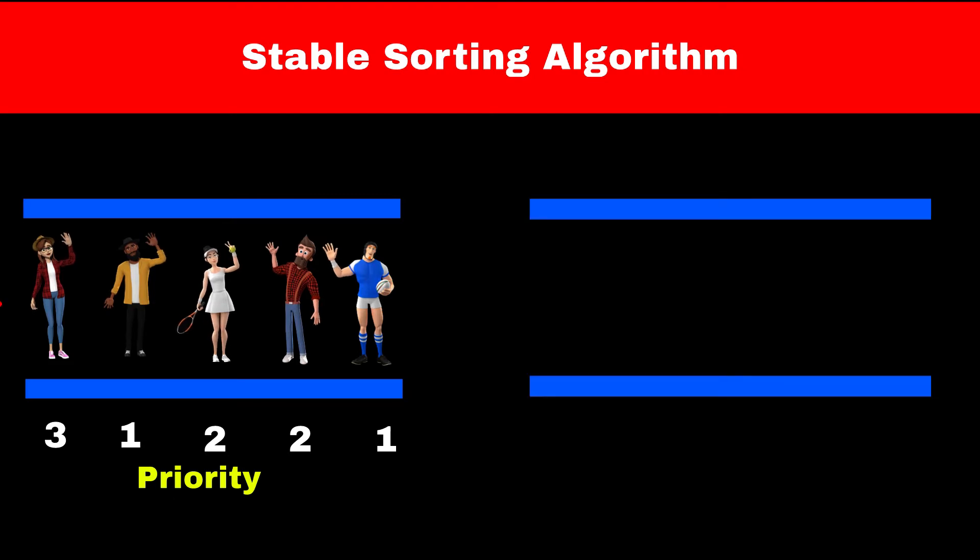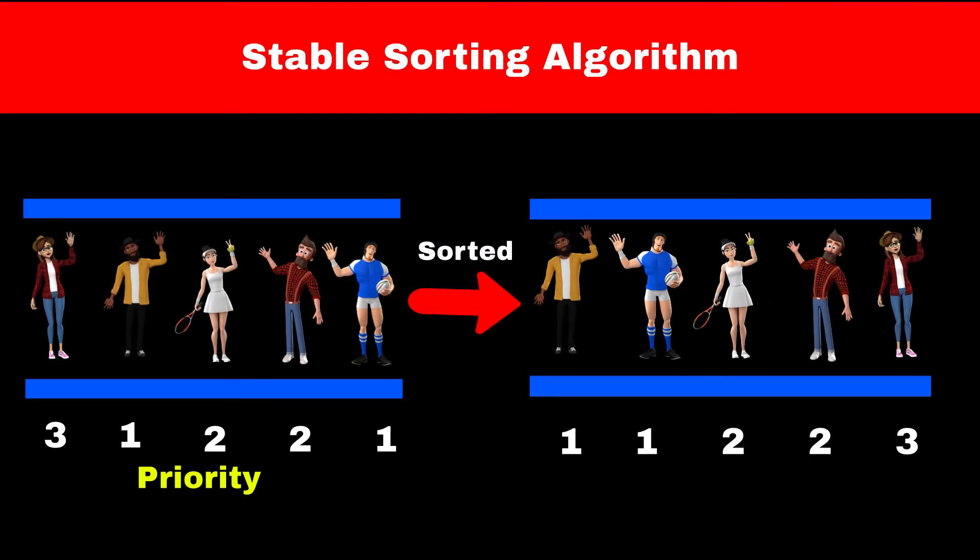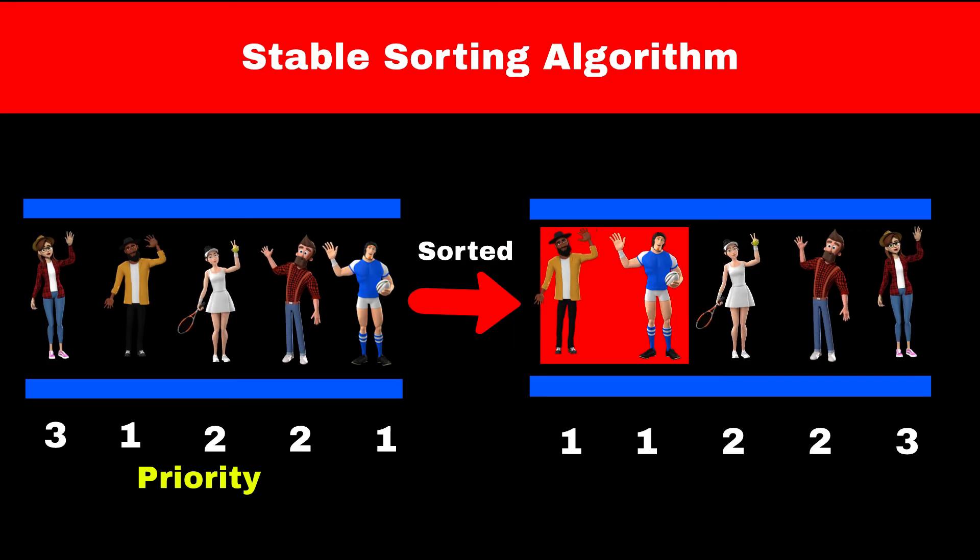When we sort the array, the order of elements with the same priority is maintained. Before sorting, Chandler was before Joey, and after sorting it stays the same. This sorting algorithm is called a stable sorting algorithm.